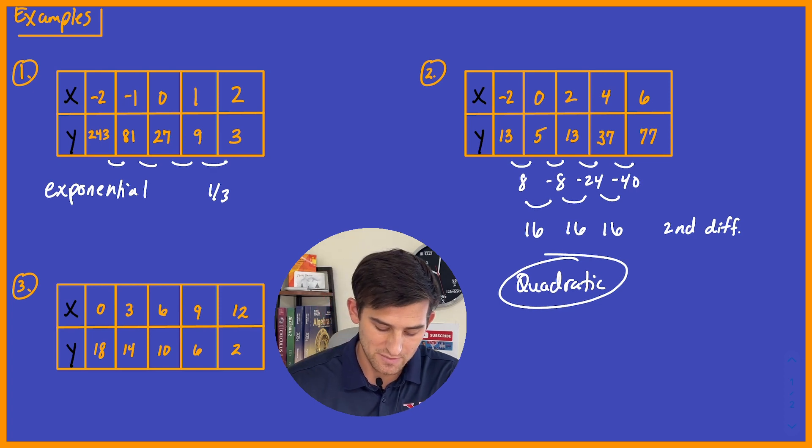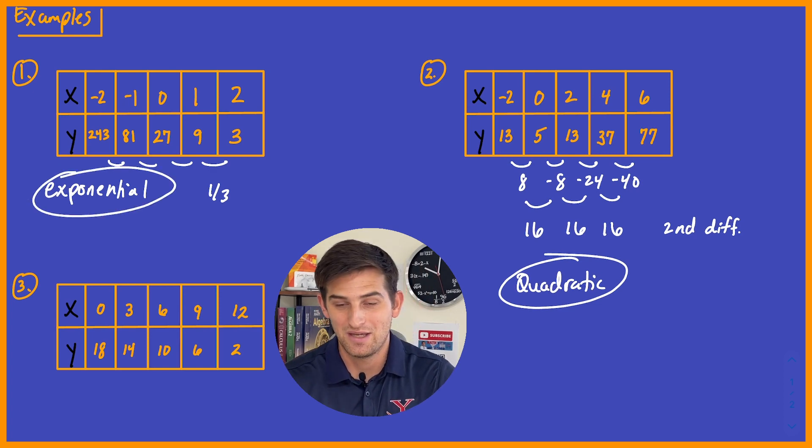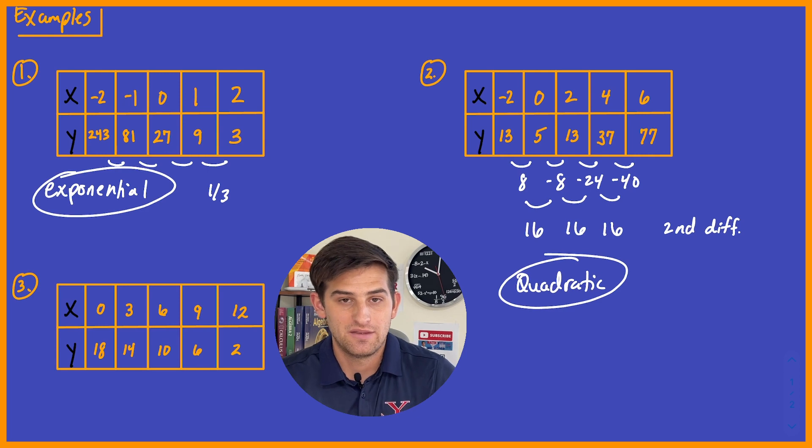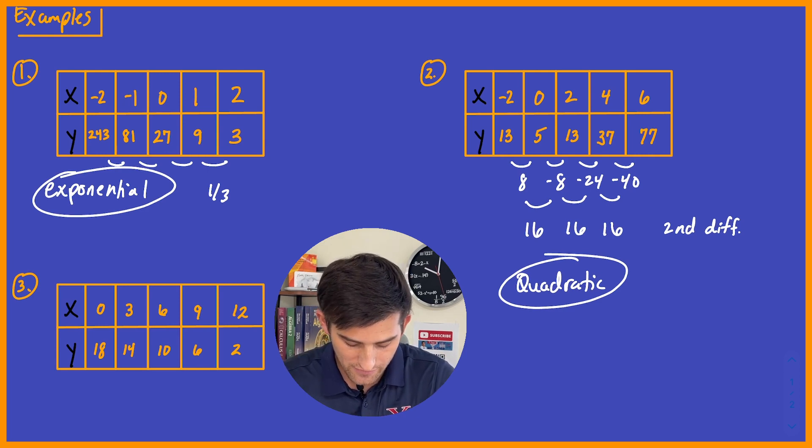So for number one, we had exponential. Number two, we had quadratic. So I bet you can guess what type of function we're going to have on number three. We look at our x values, 0, 3, 6, 9, 12, increasing by threes there. That's great. It's constant. So now let's take our attention to the y values.